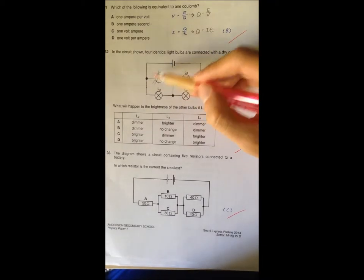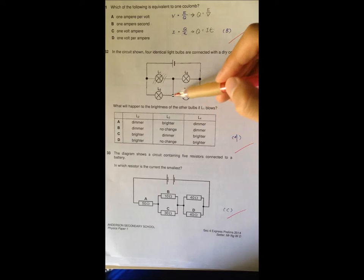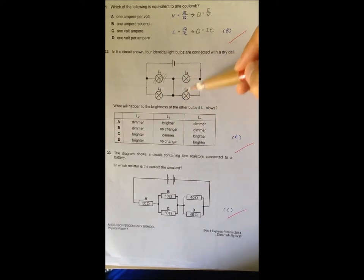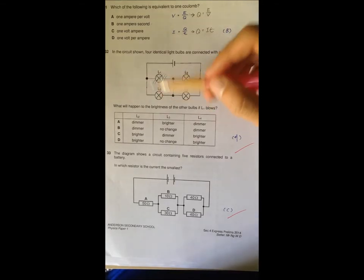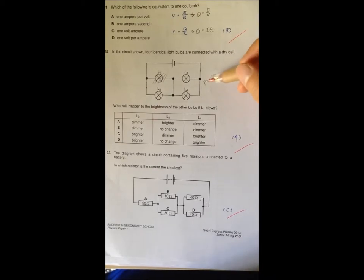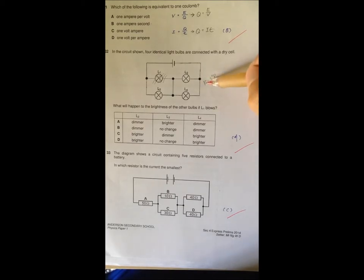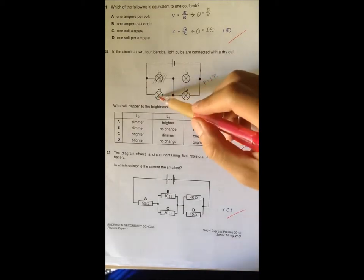If L1 blows, this part of the wire will become an open circuit. All the current will actually go through L3 first before splitting into two parts and entering L2 and L4. Compared to the initial setup, L3 definitely will receive more current and because power equals I squared R and power determines brightness, L3 will definitely be brighter.